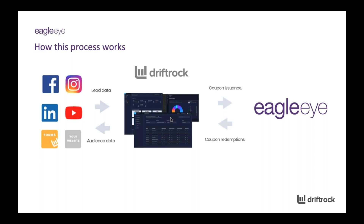You can also pass that data from Driftrock back into the ad platforms themselves. For example, if you wanted to build a lookalike audience of people that have redeemed, you can find similar people who are more likely to want to make use of your vouchers. So it's not a case of just collecting data and doing nothing with it — there are lots of ways you can use it to actively improve campaign performance. All customer data flowing through the Driftrock platform to Eagle Eye and back to the social channels is flowing in real time and is GDPR compliant and data compliant. None of your agency teams need to look at customer data — it's all sent through hashed and securely.